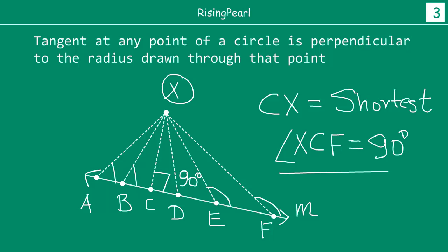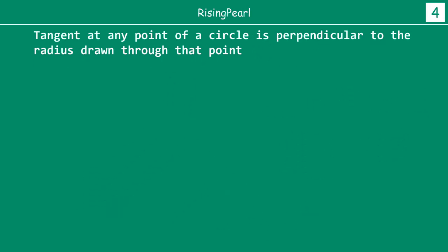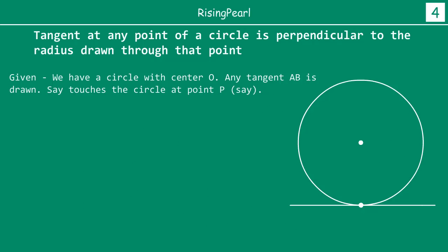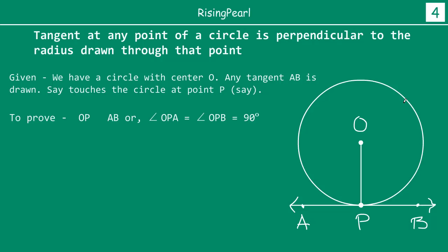Now, if this comes up in an exam, here is how you write it. First, write what is given: a circle with center O, tangent AB drawn to the circle touching it at point P. Then write what we have to prove: that OP is perpendicular to AB — that is, the angle OPA equals 90 degrees.